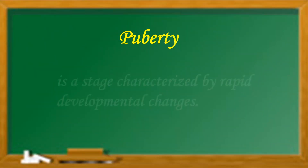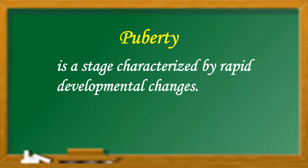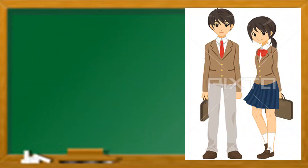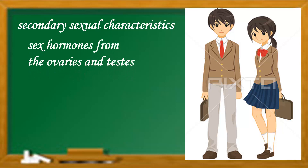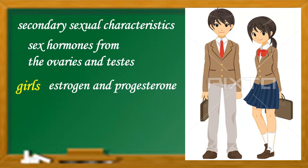Puberty is a stage characterized by eruptive developmental changes. During puberty, these changes are called secondary sexual characteristics. This is brought about by the sex hormones from the ovaries and testes. Girls experience an increase in the production of estrogen and progesterone, and the change is earlier than in boys.